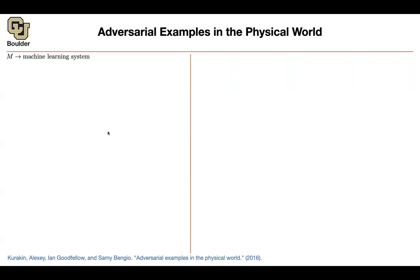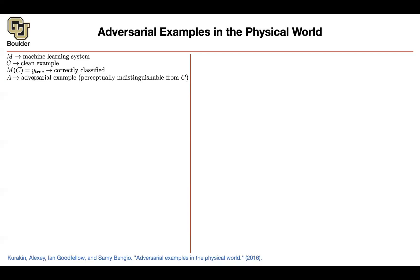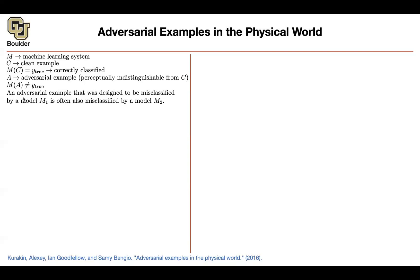Let's be more specific. You have a machine learning system — a deep neural network or convolutional neural network — and a clean example that your system classifies correctly with the correct label. You're going to have an adversarial example which is perceptually indistinguishable from the clean example, but slightly perturbed. By definition of being an adversarial example, your machine learning system is going to classify it as something different from the true class.